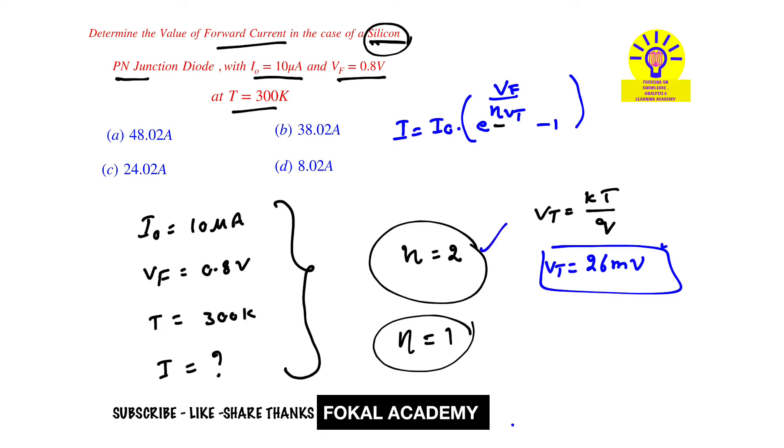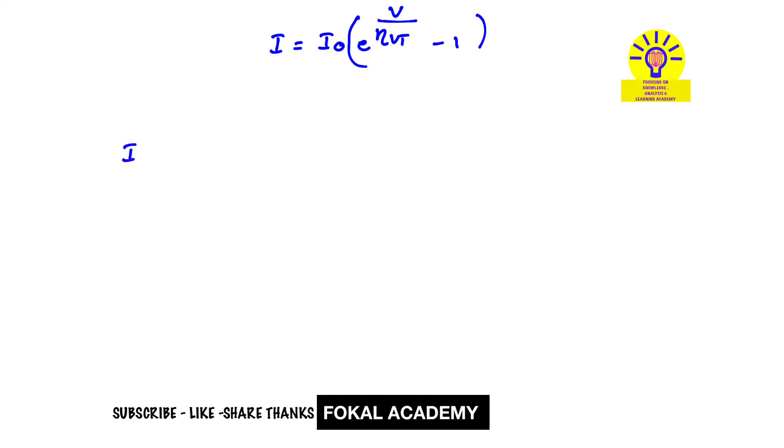Now substitute all these values in this equation then we can get the forward current. Therefore I equal to I0 is given as 10 micro amperes, that is 10 into 10 power minus 6 into E power, this is for VF, it is given as 0.8 volts divided by Eta is 2, 2 into VT the thermal voltage, it is 26 millivolts at room temperature minus 1.